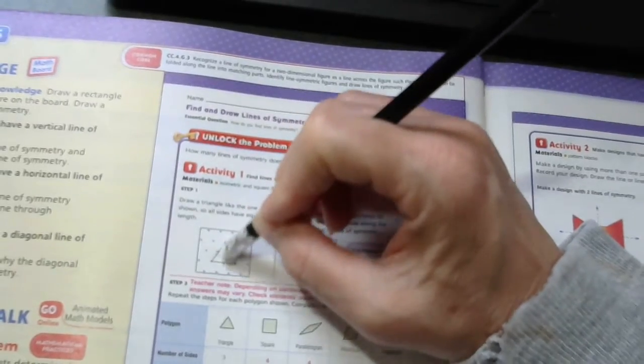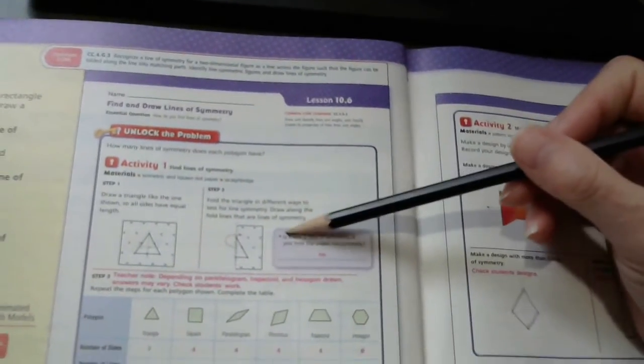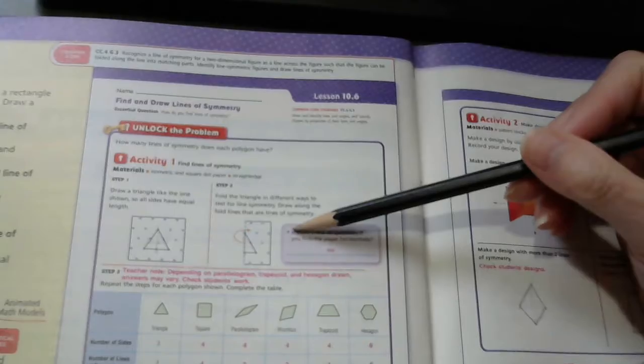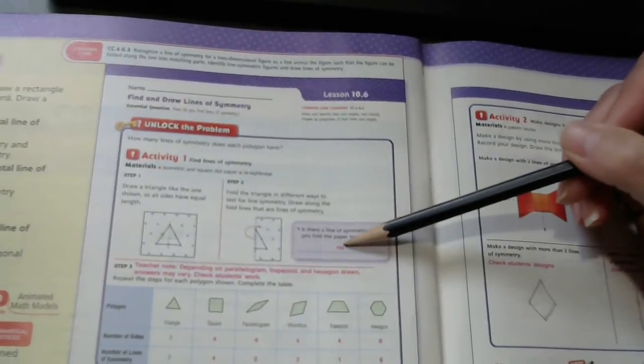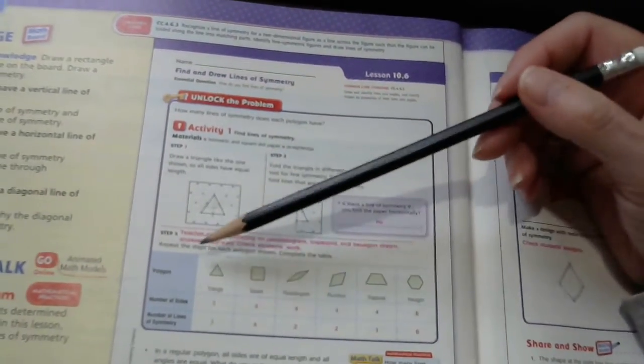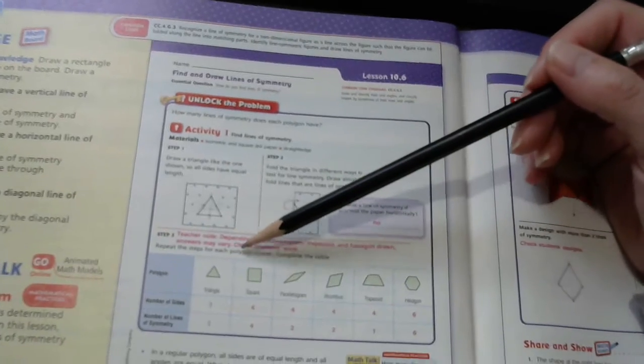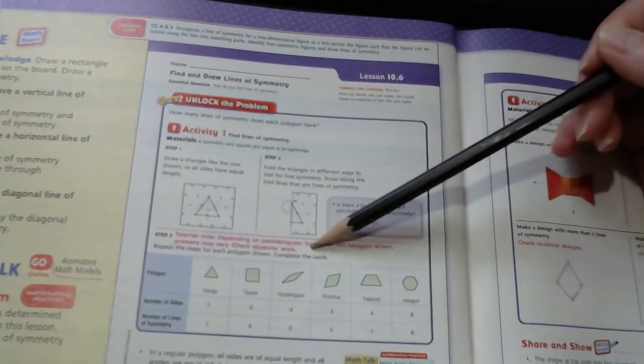So, the answer to our question, in the purple box, is there a line of symmetry if you fold the paper horizontally? No. Now, it says repeat the steps for each polygon shown. Complete the table.